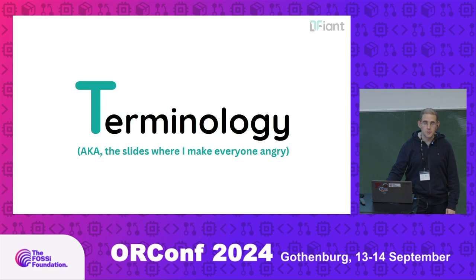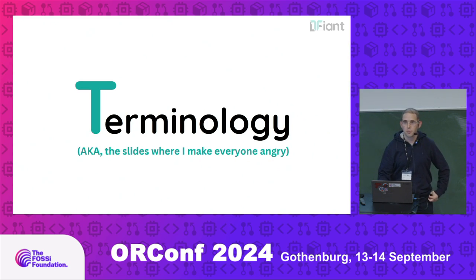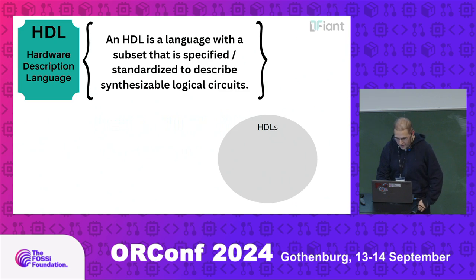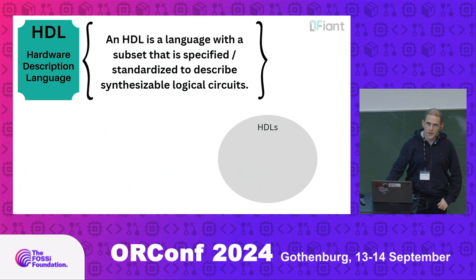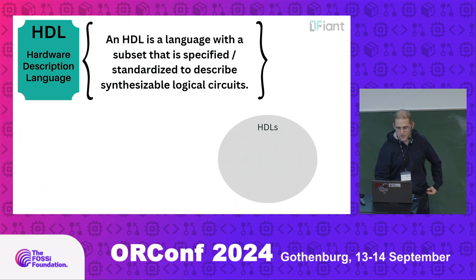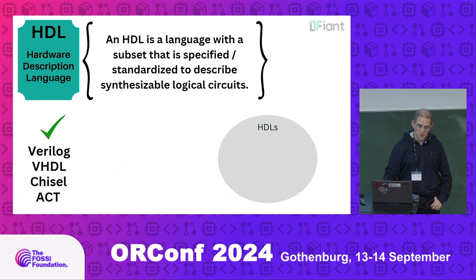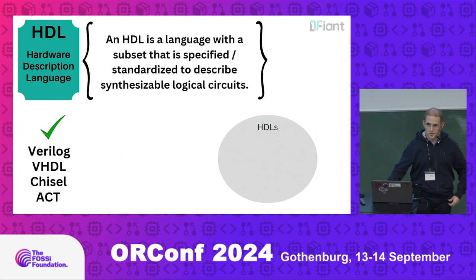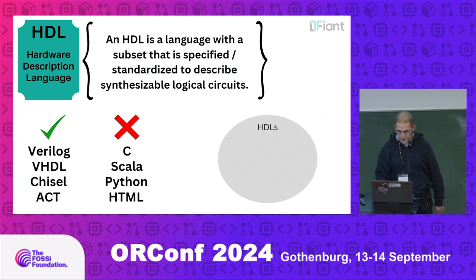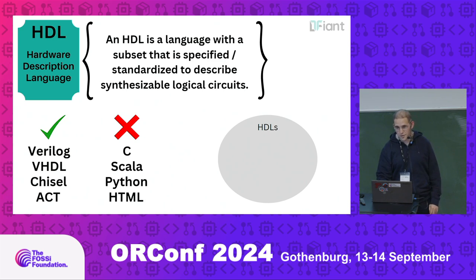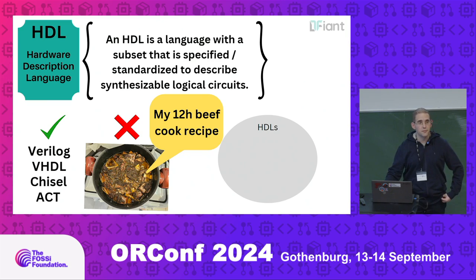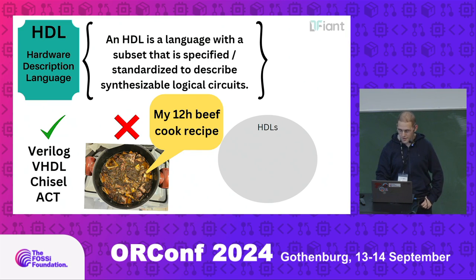Let's start with terminology, also known as the point where I piss everyone off. HDL is a language with a subset that is specified or standardized to describe synthesizable logical circuits. This means that Verilog, VHDL, Chisel, or ACT — the Asynchronous Design Language — are all HDLs. C, Scala, Python, HTML are not. Also, my beef recipe is not an HDL.